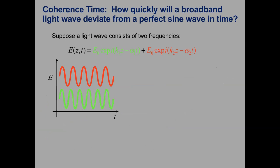Before getting into the math, let's talk about broadband waves made of many frequencies. Here I'm showing two, and we want to think about what happens when these two waves are added together. There will be points where the waves destructively interfere — zero amplitude — and other points where they almost constructively interfere, giving really high amplitude. So overall the amplitude changes with time.